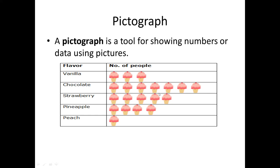This pictograph shows flavor and number of people — specifically, how many people like which flavored ice cream. Vanilla has 3 cones, so 3 people like vanilla. Strawberry has 5 pictures, so 5 people like strawberry. Peach has 1 person. Pineapple has 4 people. And chocolate has 7 people. This is how you read a pictograph.